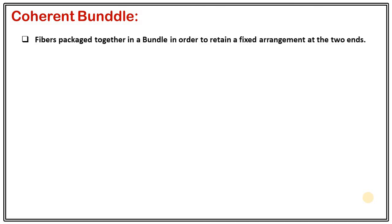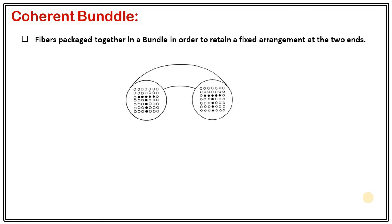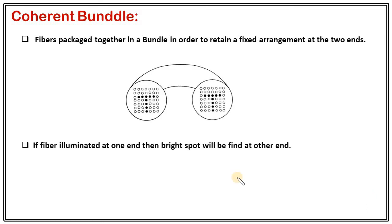Let's discuss one more introductory concept: the coherent bundle. Instead of a single optical fiber, if a large number of fibers are packed together in a bundle retaining a fixed arrangement at both ends, this bundle is called a coherent bundle. If you illuminate one end, a bright spot appears at the other end. Using a coherent bundle, an image can be transmitted from one end to the other.